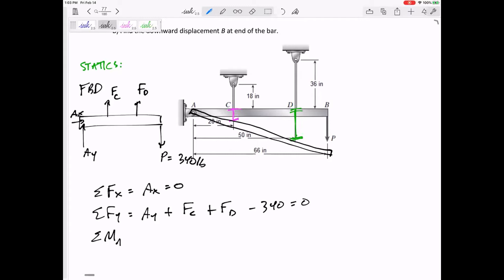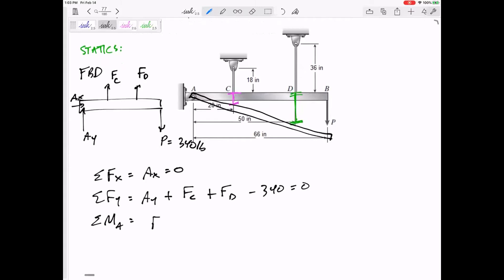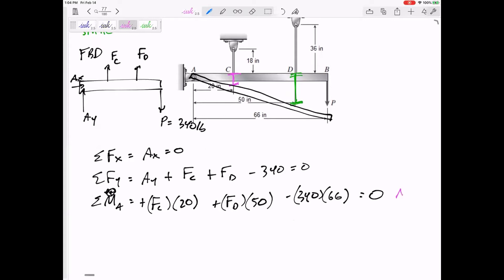Here's my other equation. I think this third equation is really going to be the best, most helpful equation. FC times its moment arm of 20 inches, we'll call that positive counterclockwise. The Y equation gives me another unknown, AY.